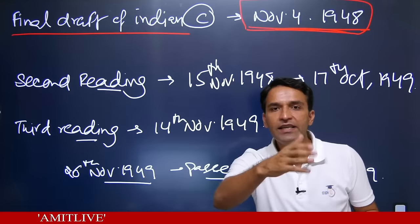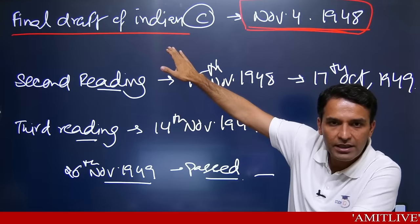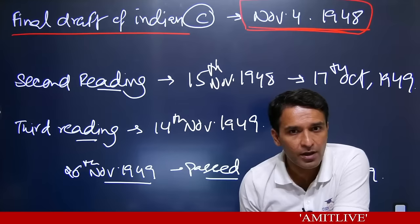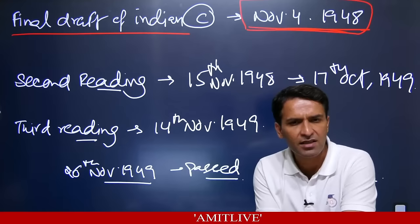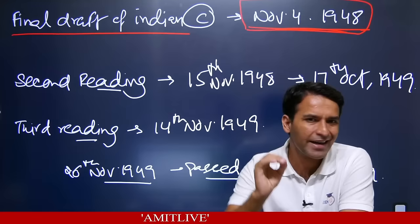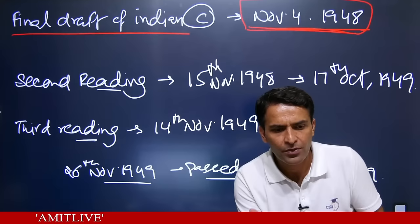Third reading is essentially voting. Dr. B.R. Ambedkar would present a clause, ask if it should pass, and all 299 Constituent Assembly members would vote. If the majority said yes, it passed. On November 26, 1949, Dr. B.R. Ambedkar moved a motion: 'The constitution as settled by the assembly be passed.' The motion was passed, voted upon clause by clause from November 14, and on November 26, 1949, the constitution was declared passed.